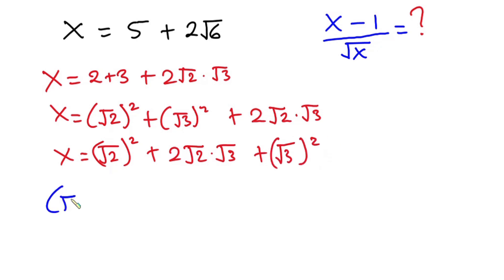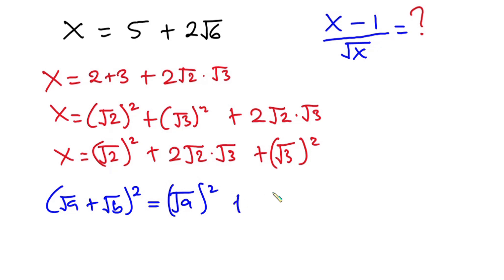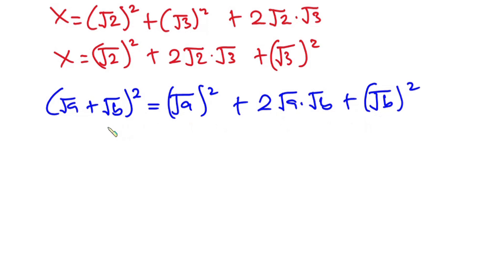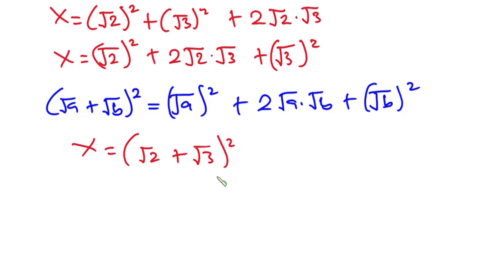If you have (√a + √b)² and you expand it, you get (√a)² + 2·√a·√b + (√b)². Comparing this pattern to our equation, it means that x is equal to (√2 + √3)².